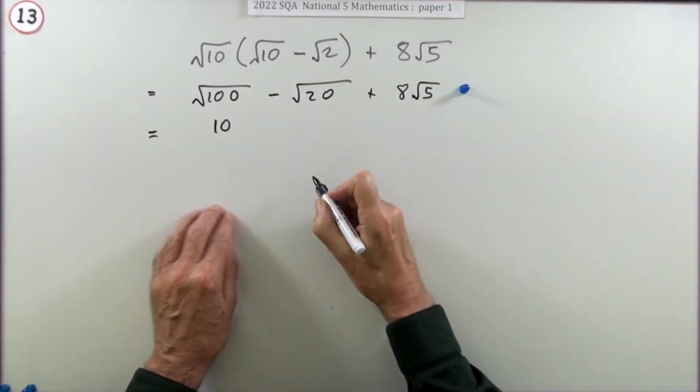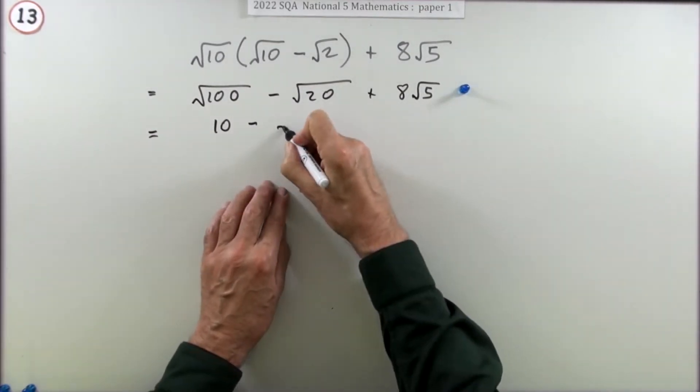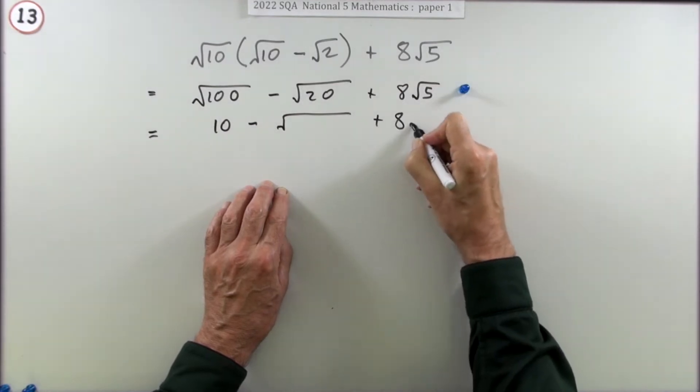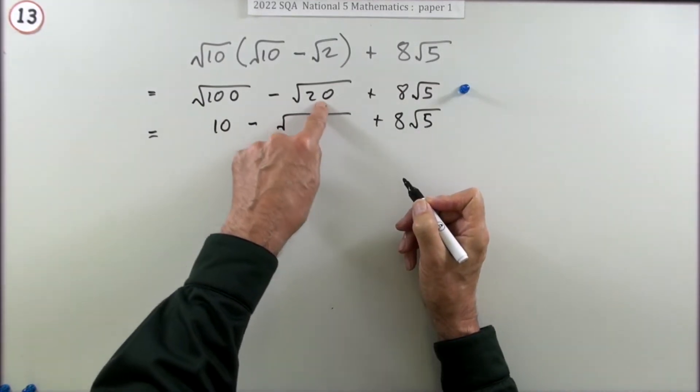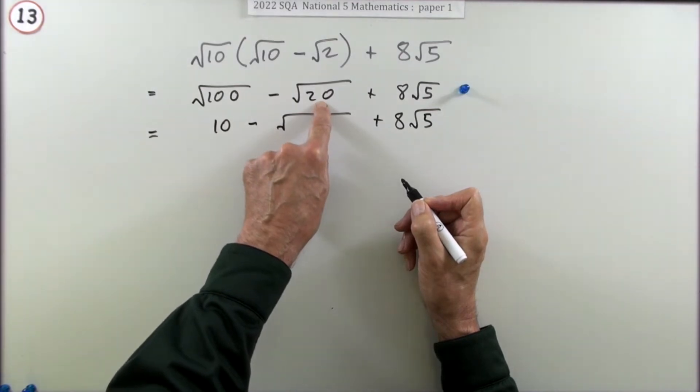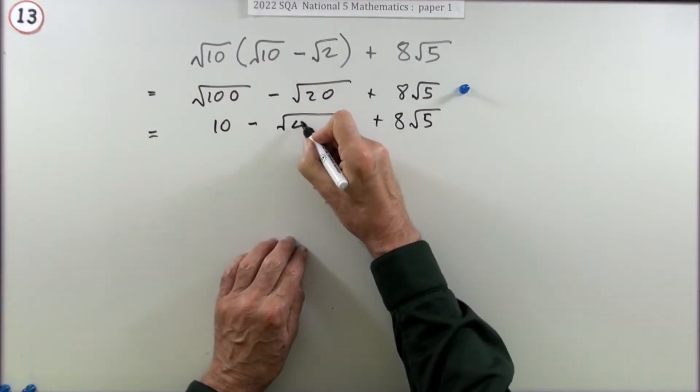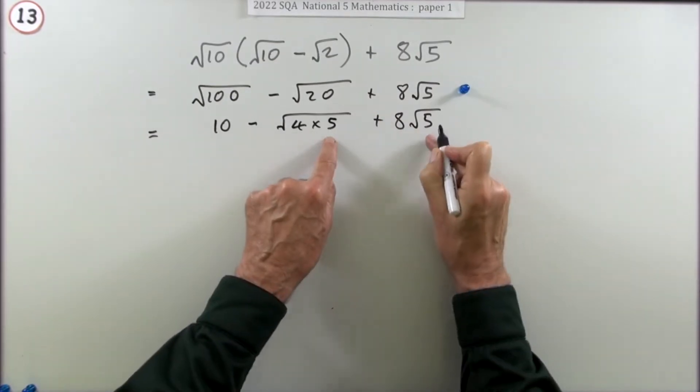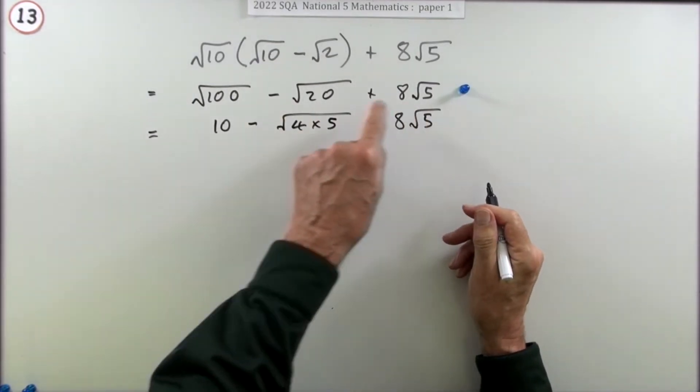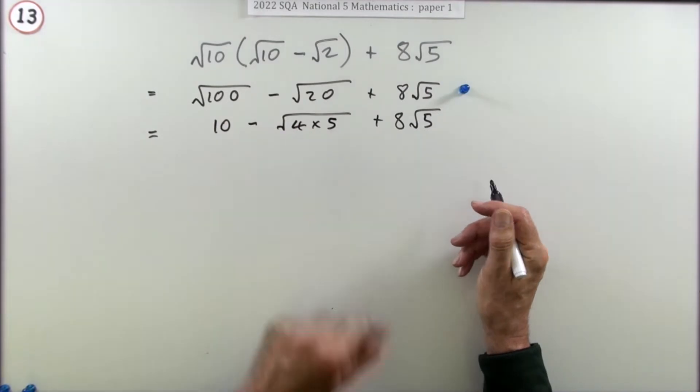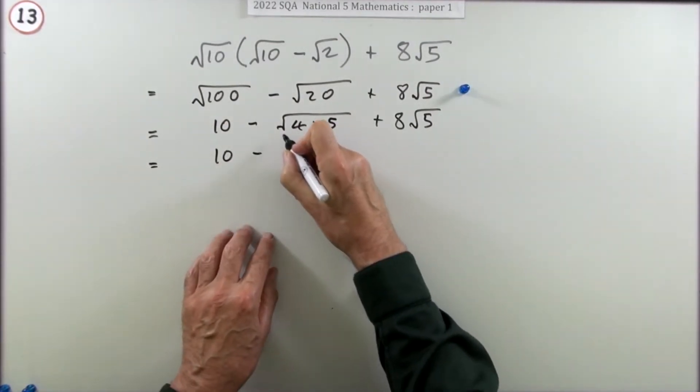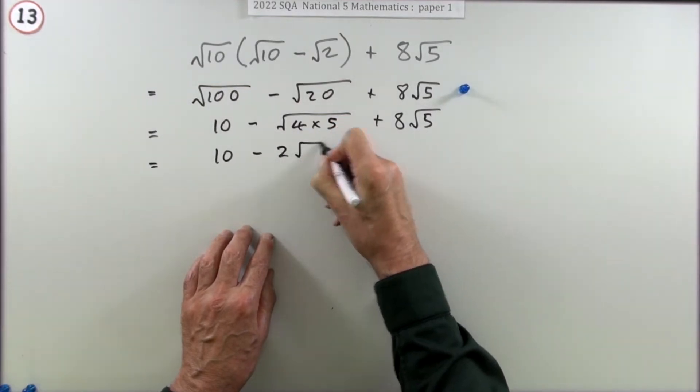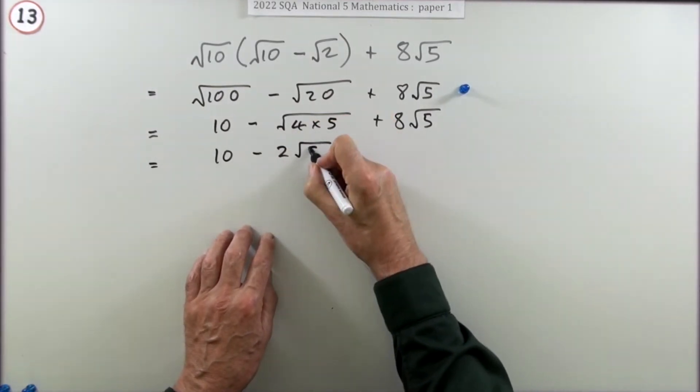Now root 100, well you know that one - 10 times 10 is 100. Now 20, can you make that any simpler? Are there any perfect squares which are a factor of 20 that could get involved in a multiplication to make 20? Yes, 4 - that's 4 times 5. See there's that 5. You could probably just have said well I need a 5 out of here so that must be 5 times what, it's 5 times 4. So now you've got 10 minus, now the square root of 4 is 2 so that can pop out, the square root of 5 you're stuck with but you want it anyway, plus 8 root 5.